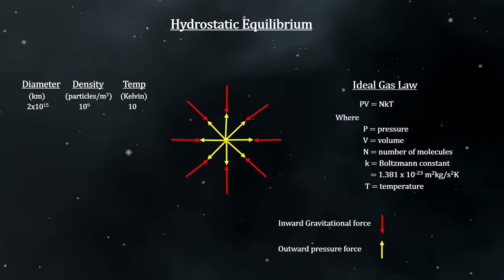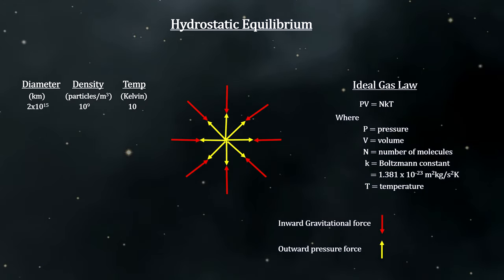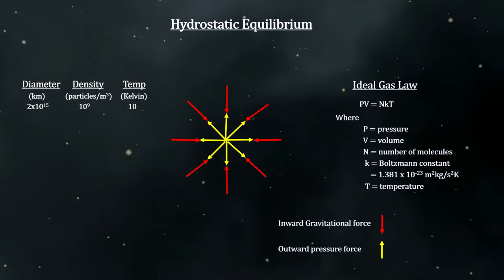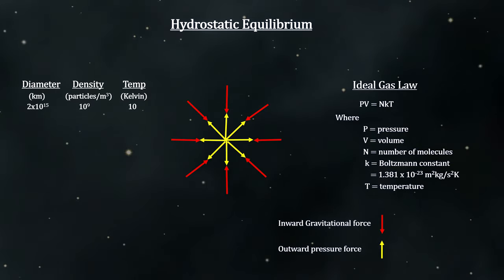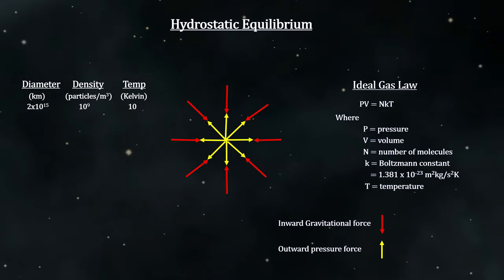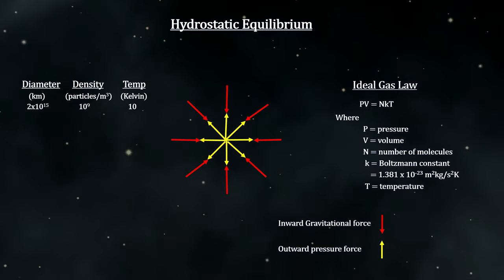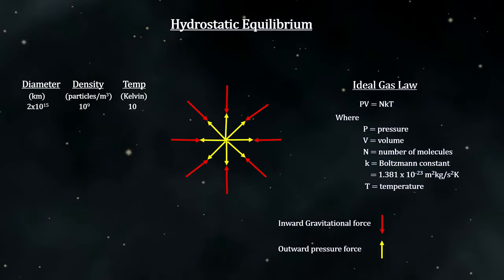These clouds are in hydrostatic equilibrium and ruled by the ideal gas laws. At every point inside the cloud, the weak outward gas pressure is equal to the weak inward gravitational force.